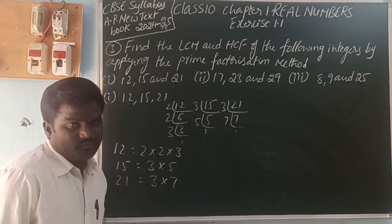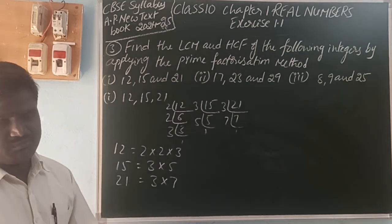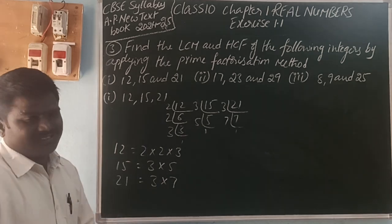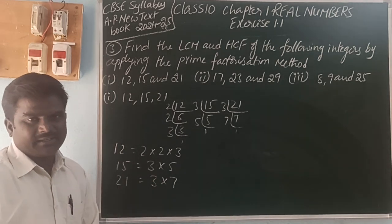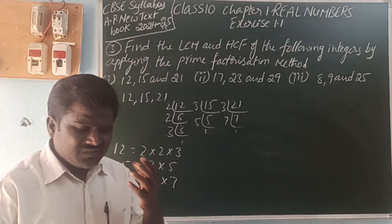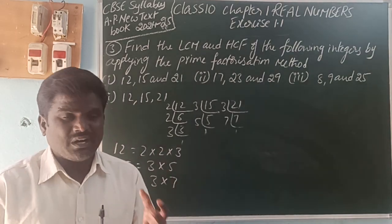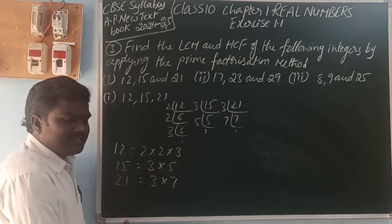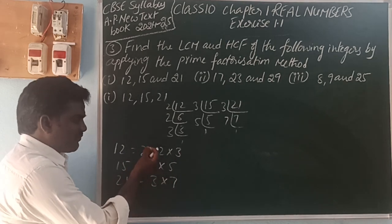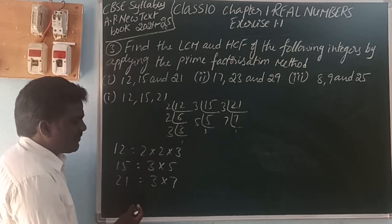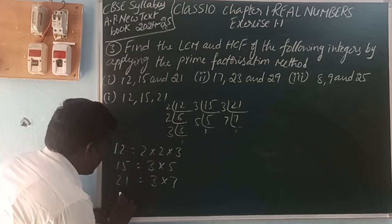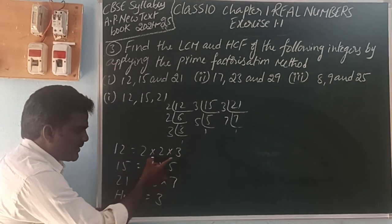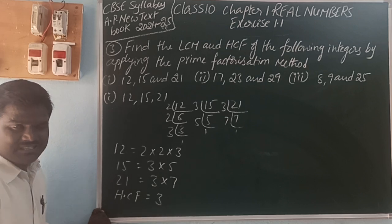We need to find LCM and HCF. LCM is Least Common Multiple, HCF is Highest Common Factor. For HCF in the prime factorization method, we take the common prime factors. Here the prime factors are 2, 3, 5, and 7. The common prime factor is 3. It appears 1 time in each factorization. So HCF is 3.